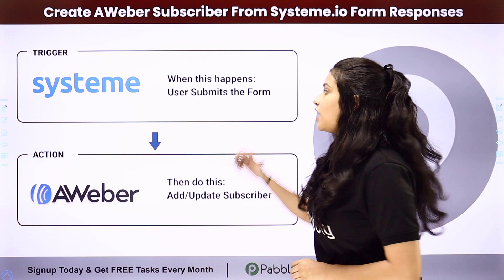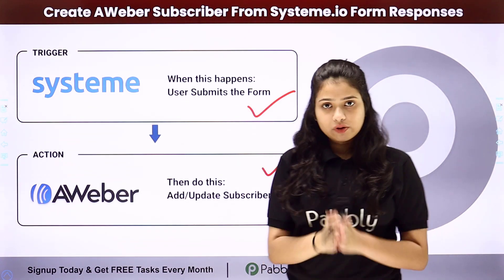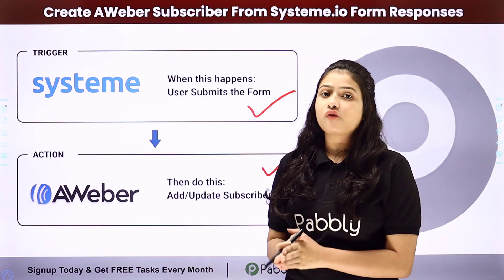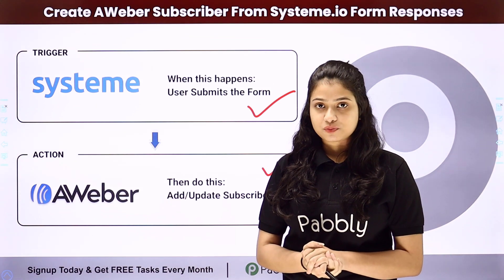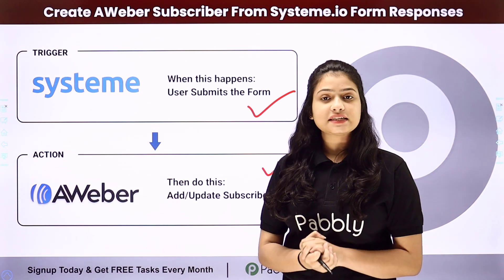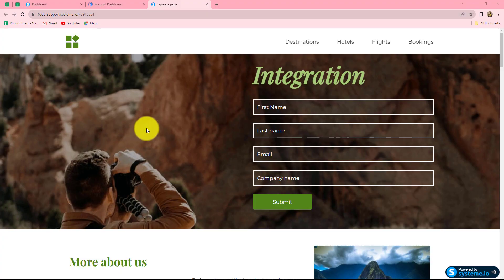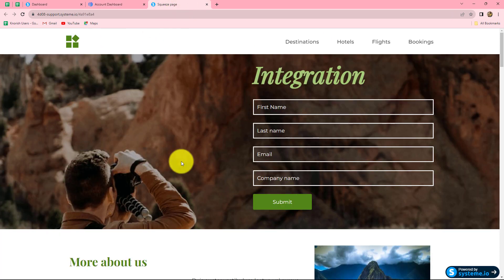We have Systeme.io in our trigger and Aweber in our action. We will be connecting both of them using Pabbly Connect in such a way that whenever a new form is submitted in Systeme.io, automatically by using that same response, a new subscriber is going to be created and added in Aweber. We are going to learn that how can we automatically create a new subscriber in Aweber as soon as a new form is submitted by a new lead in Systeme.io.